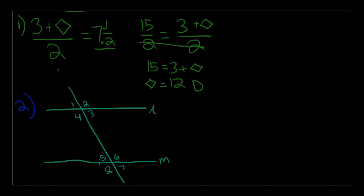So, in the figure above, if L is parallel to M, then the sum of the measures of angles 2 and 4 must equal the sum of the measures of which of the following pairs of angles, and then there are a list of other angle pairs.